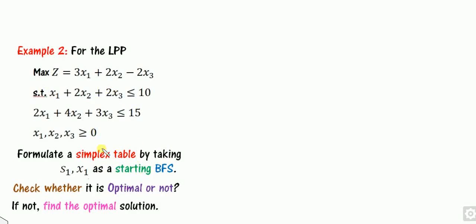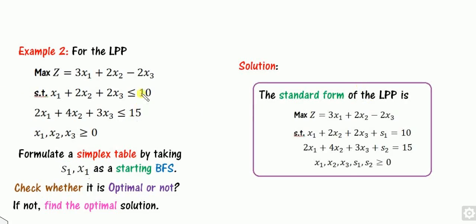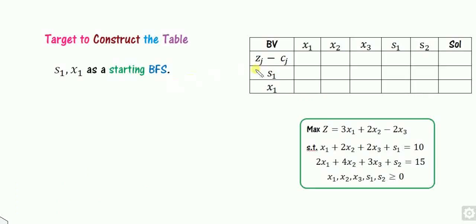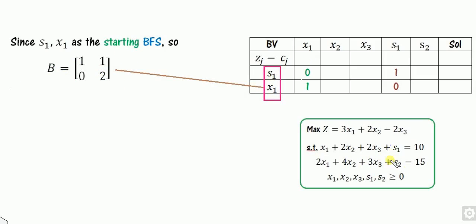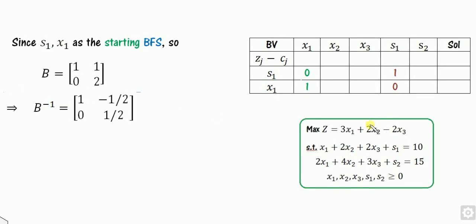Let's look at one more example. Consider this LPP. You have to formulate the simplex table by taking S1 and X1 as the starting BFS, and again check whether this is optimal or not. Write the standard form. Always remember the first basic variable is written first, the second one next. Since S1 and X1 are the starting BFS, the columns corresponding to S1 and X1 form the identity matrix, and ZJ minus CJ is zero for those.